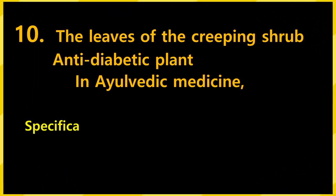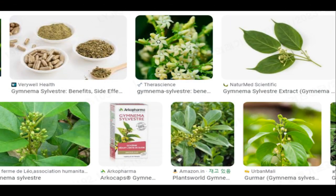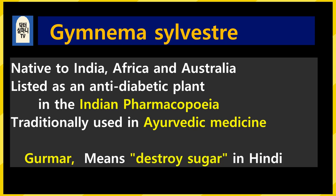Now, the 10th plant. In Ayurvedic medicine in India, it is used for diabetes. It is the leaf of a climbing shrub. It reduces food cravings, has an anti-obesity effect, and improves metabolic syndrome. What is the name of this plant? It is Gymnema sylvestre — a very famous medicinal plant. Its origin is India, Africa, and Australia. The leaves are used for medical purposes, and it is listed in the Indian pharmacopoeia as an anti-diabetic plant, having been used for diabetes in Ayurvedic medicine.